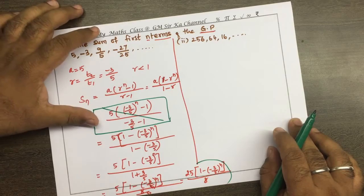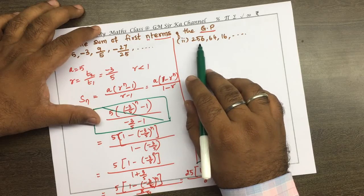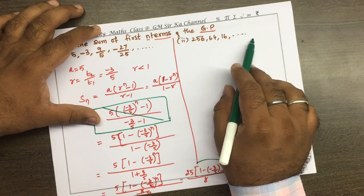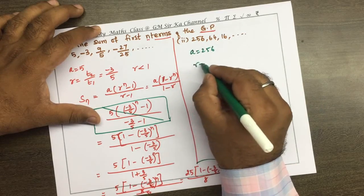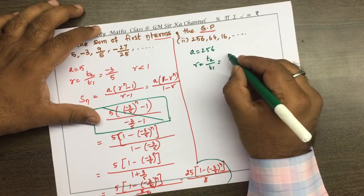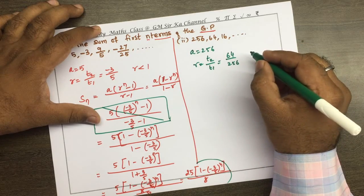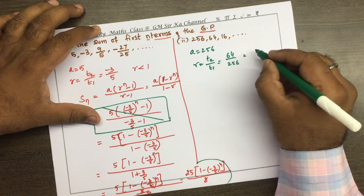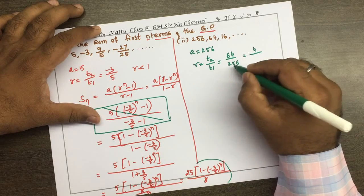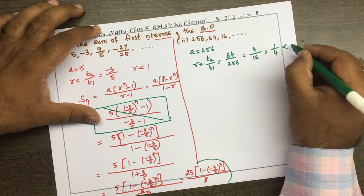The second problem: the geometric progression is 256, 64, 16, and so on, up to n terms. So a equals 256, and r equals t2/t1, which is 64/256. Dividing, 64 divided by 256 equals 1/4, so r equals 1/4, which is less than 1.